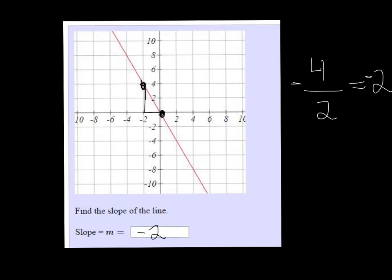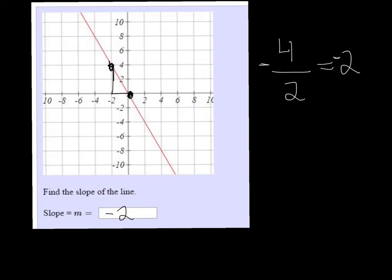Now you could also, since we have those two points, you could use the slope formula and you might be more comfortable with that method. So our two points here, we have negative two, four as one point and our other point was zero, zero.